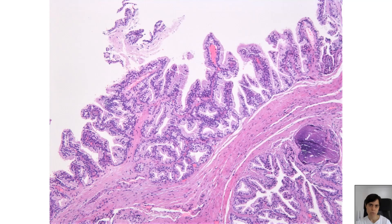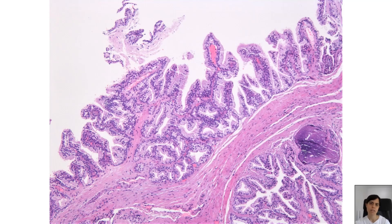Another area to highlight: the benign prostatic epithelium lining this lesion, which is considered to be ectopic in nature. We can appreciate the dual cell population — the columnar luminal cells with their frothy pale cytoplasm and more purple dark-staining nuclei, as well as the compressed cells at the basement membrane, the basal cells with their lighter staining slate-gray colored nuclei.